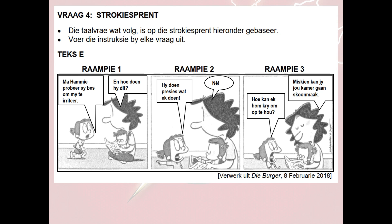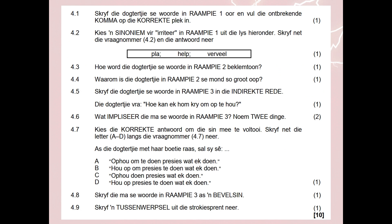This is from your 2018 paper. We have language questions, but they do look at this as well. When you look at this, you look at the facial expression, her body language, the hand that she is pointing, etc. You can see the frame numbers, what they're saying, the type of bubbles, etc. When we look at the questions, 4.3 and 4.4 from this paper have to do with the visual. 4.3 asks how the daughter's words are being emphasized in frame 2. 4.4 asks why the daughter's mouth is so wide open in frame 2. Everything else you see here is language questions — do you see how they hide your visuals inside your language paper?